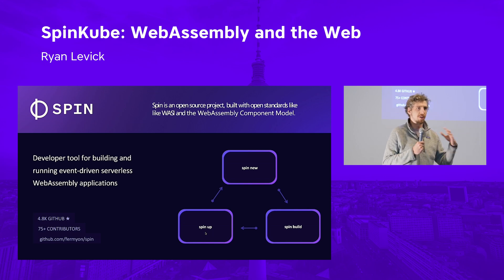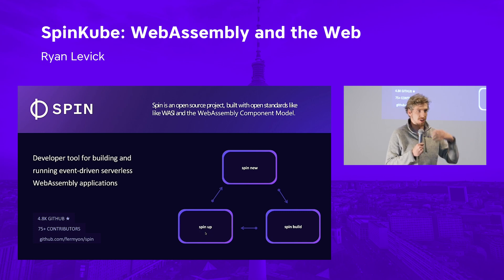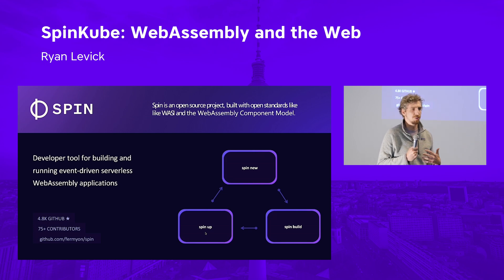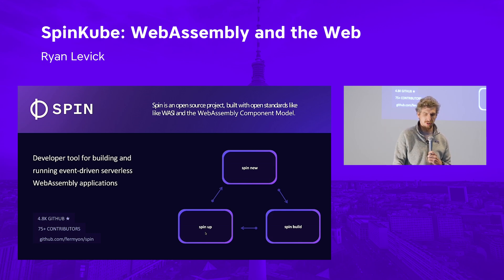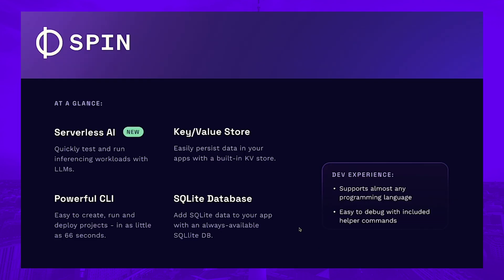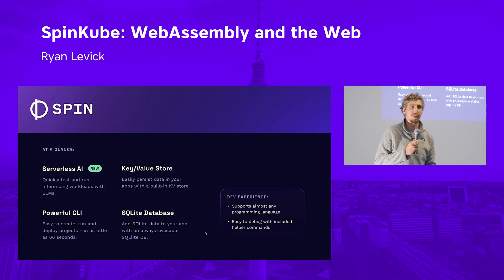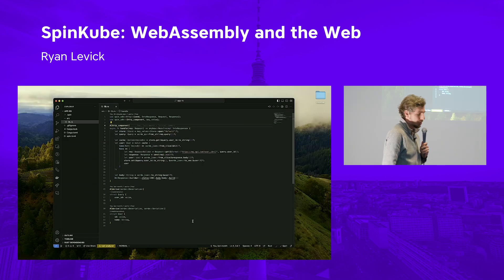Spin operates in a serverless or event-driven model. You write a Spin application to be triggered by something — an HTTP request, a PubSub message, or similar — and your code executes based on that event. Spin gives you access to a whole bunch of APIs: key-value stores, SQLite databases, AI inferencing, all wrapped in a CLI experience so you can get started quickly without doing too much setup.